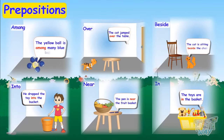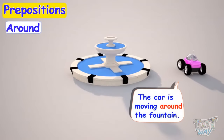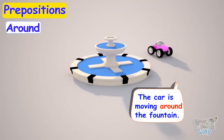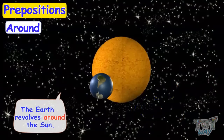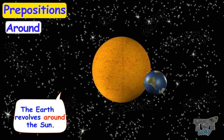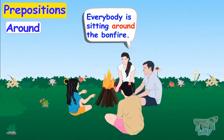We are done with so many prepositions. Let's learn some more. Our next preposition is 'around'. The car is moving around the fountain. The earth revolves around the sun. Everybody is sitting around the bonfire.